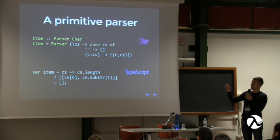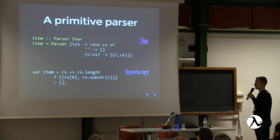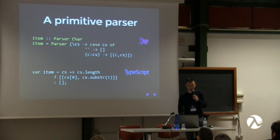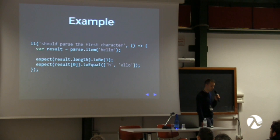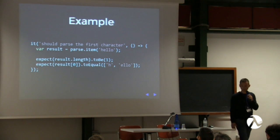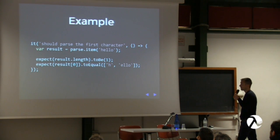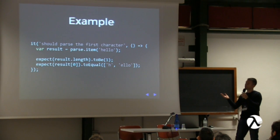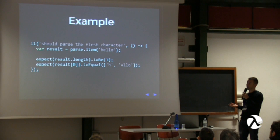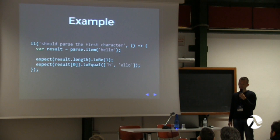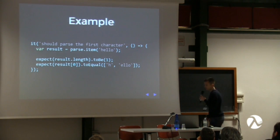The result of item: if the string is empty it returns an empty array of results; otherwise it parses the first character and returns a tuple where the first item is that character and the second item is the remainder of the string. You can see a unit test written in Jasmine: parsing the string 'hello' with item returns a tuple containing 'h' and 'ello'.